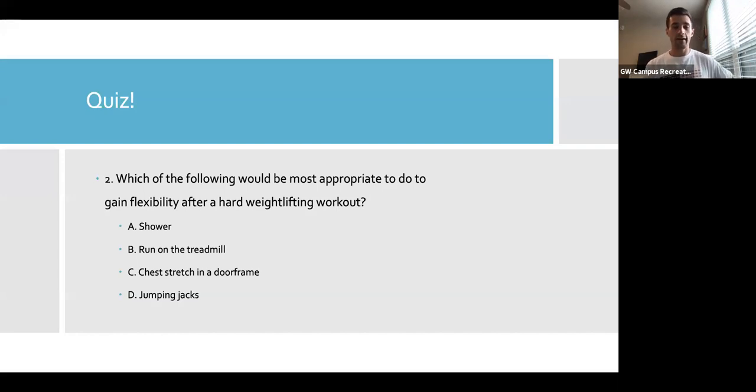The other activities, if you were to run on the treadmill, you could do that in theory if you wanted to do a cool down, if you wanted to just get the body to relax a little bit, so that wouldn't be inappropriate. But in terms of gaining flexibility, the best would be to do a chest stretch. And similar with a jumping jack, you could do that at a mild or moderate intensity to try to lower your heart rate and try to just kind of relax the muscles and relax the body from your intense workout. But the best for gaining flexibility would be to do the chest stretch in a doorframe.